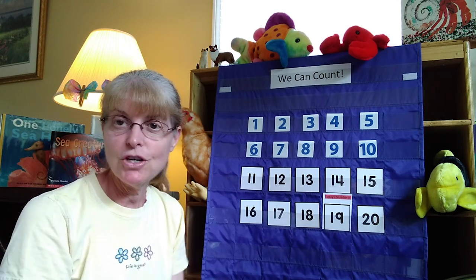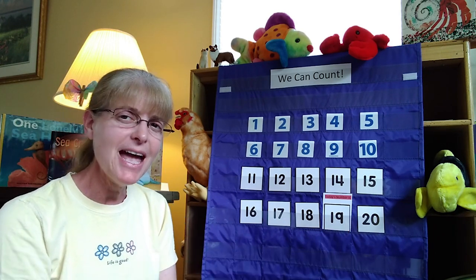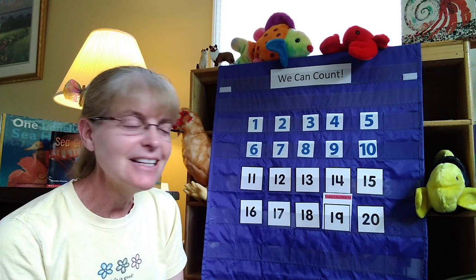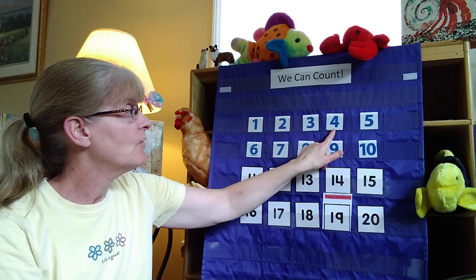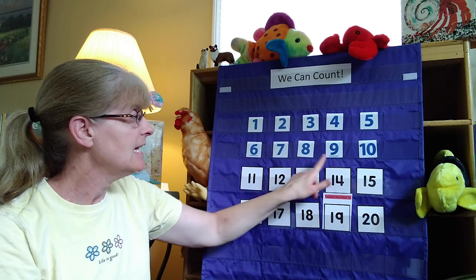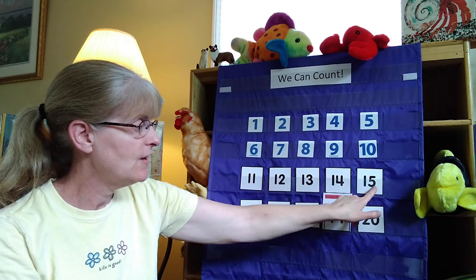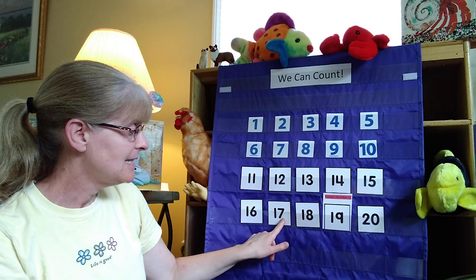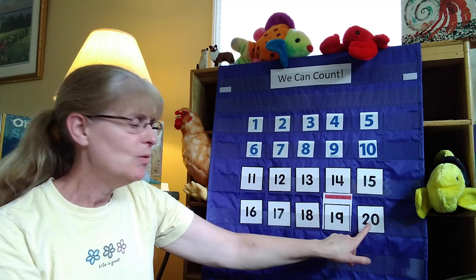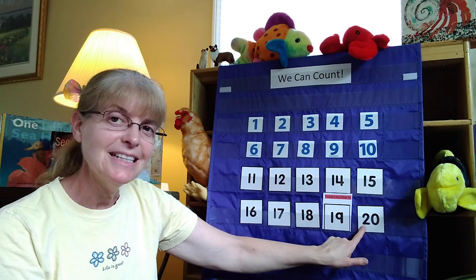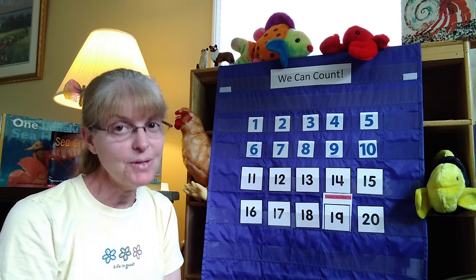Let's see what we have on our number chart today. Our number today is a one and a nine. Do you know what number that is? That's 19. Let's see if we can count up to 19 together: 1, 2, 3, 4, 5, 6, 7, 8, 9, 10, 11, 12, 13, 14, 15, 16, 17, 18, 19. Right there. And what's after 19? 20. That's a big number, isn't it? So today our number is 19, and that's a pretty big number.